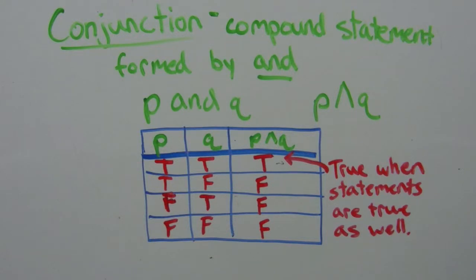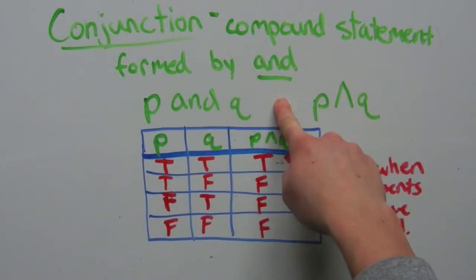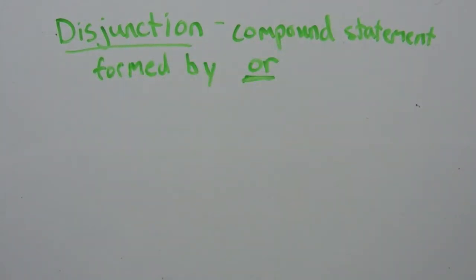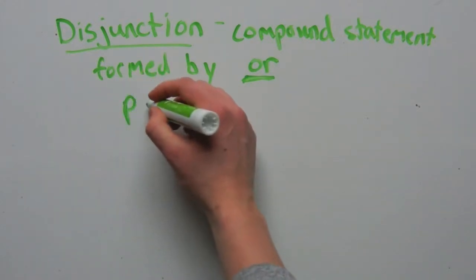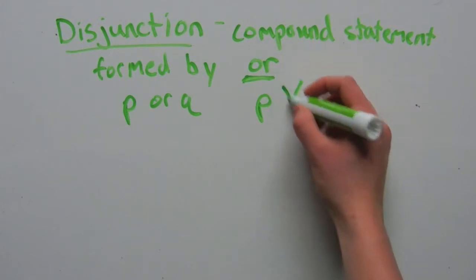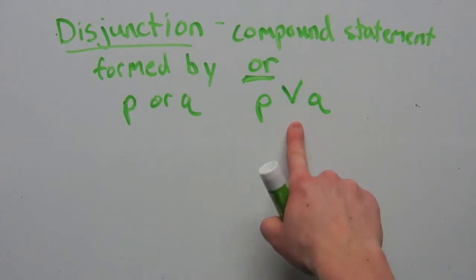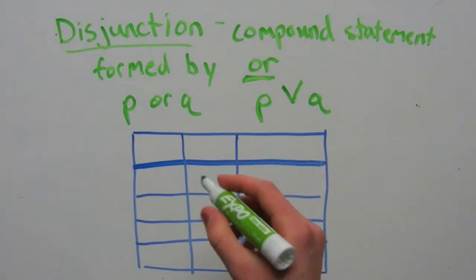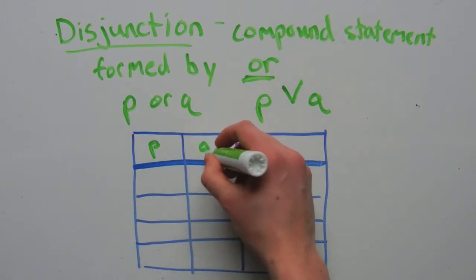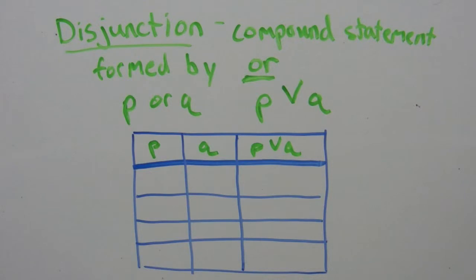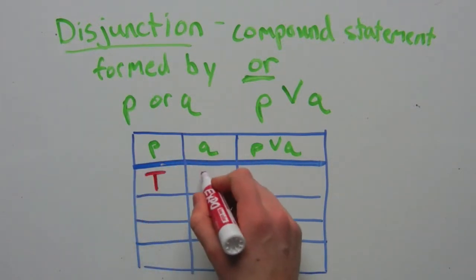Now we understand what 'and' means — let's go over what 'or' means. A disjunction is a compound statement formed by the word 'or.' Our two statements P or Q are written in symbols as P ∨ Q — a downward caret, almost like a big capital V. Let's go over the truth table for this. We start with statement P, then Q, and then P or Q.